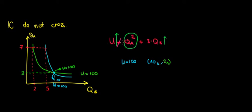We already have more of one quantity for a given level of the other — more bananas for the same level of apples — so by definition utility has to be higher. By definition they cannot cross, because they cannot be equal. The blue line has to show higher utility levels, and higher utility levels cannot cross lower utility levels. That is the proof — we are done.